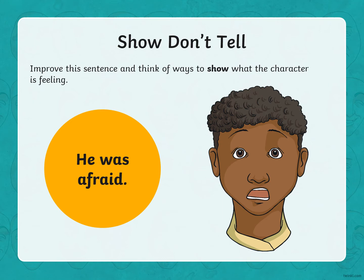Next one: 'He was afraid.' Looking at the facial expressions — what do you do when you're scared, when you're afraid of something? Write a sentence underneath that shows me he was afraid. Pause the video to give yourselves time to think and record your sentence, making sure you've got punctuation — at least a capital letter and a full stop.